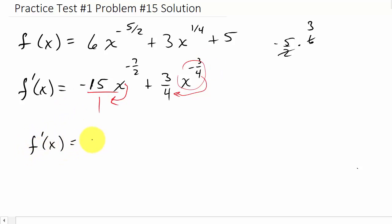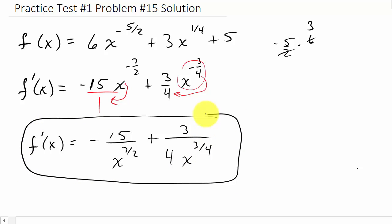I get f prime of x is going to be negative 15 over x to the 7 halves plus 3 over 4x to the 3 fourths. And so this would be your answer.